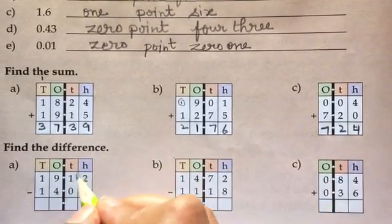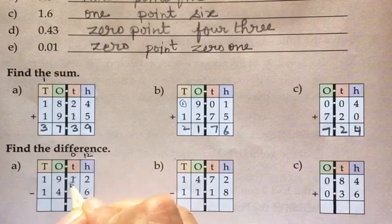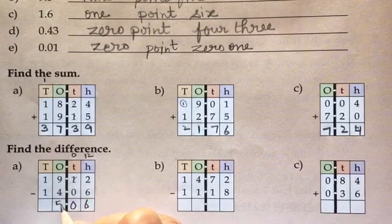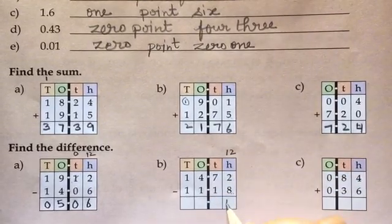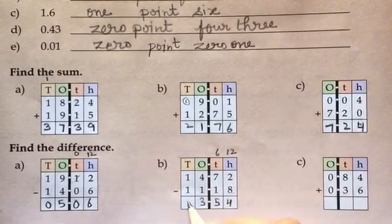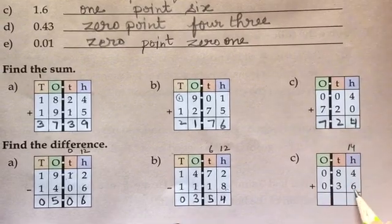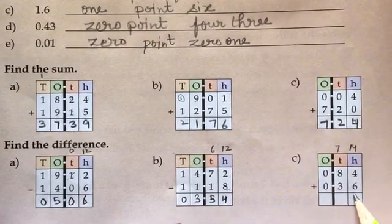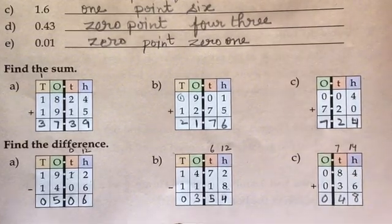Now the subtraction the same way earlier we have done. So we cannot subtract 6 from 2. So it will be 12 and it will be 0, 5. So 12 minus 6 is 6, 0 minus 0 is 0, 9 minus 4 is 5 and 0, 1 minus 1. 12 here also again 12 minus 8 is 4. Here it will be 6, 6 minus 1 is 5, 4 minus 1 is 3 and 1 minus 1 is 0. Here the last one, it will be 14 because we cannot subtract 6 from 4. So we will have to borrow this 8 will be 7. So 14 minus 6 is 8, 7 minus 3 is 4.0. So this is the answer.